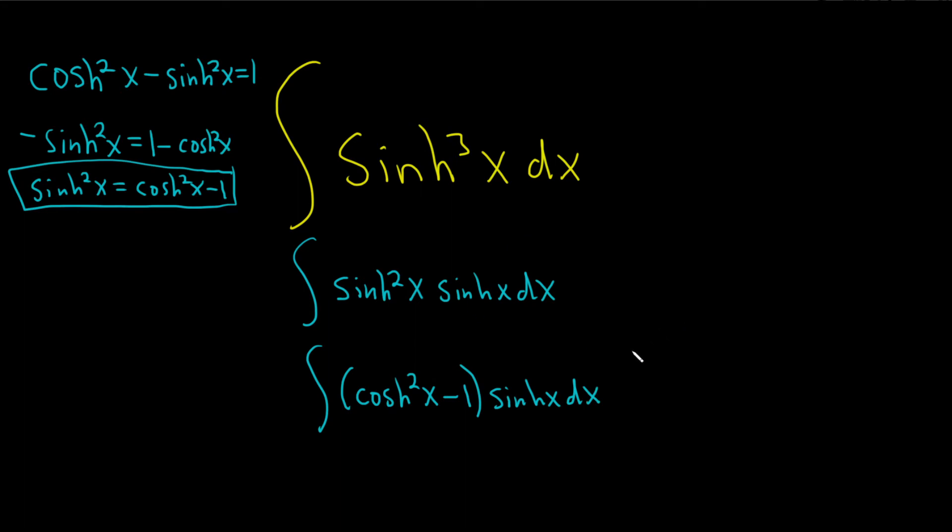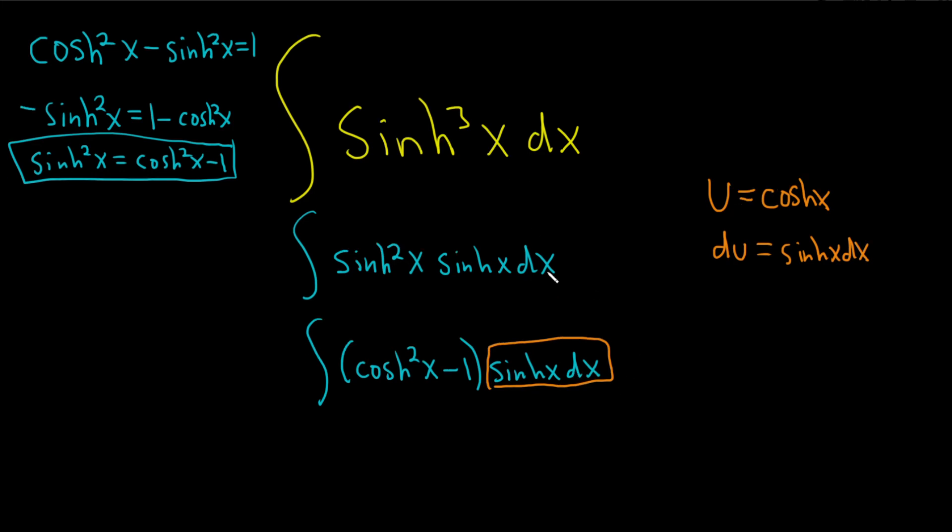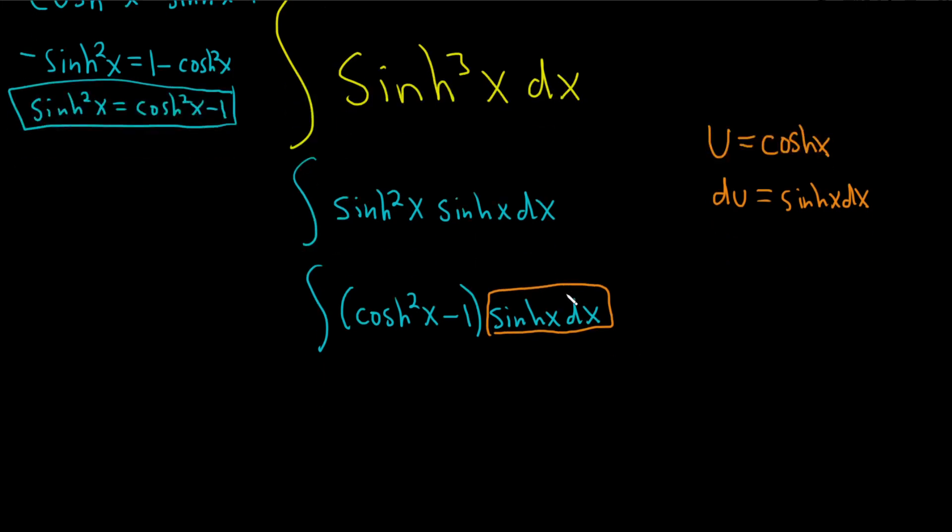And now we can make our u substitution. We can let u be equal to the hyperbolic cosine of x. And then du is conveniently, very conveniently, just the hyperbolic sine of x. There's no negative here. It makes it much easier. And that's exactly what we have in our integrand. Our du is exactly sinh x dx. So now we can make our substitution.